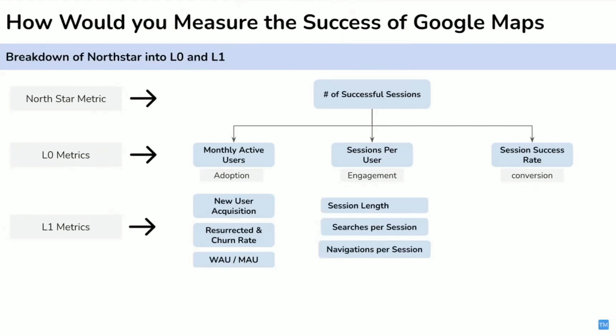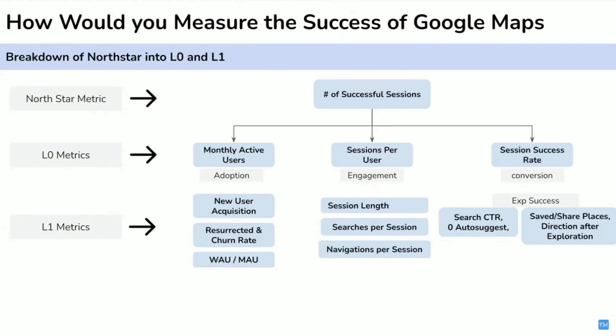The most important metrics are those telling us the quality of the session — we track two things: exploration success rate and navigation success rate. For exploration success rate, we measure search CTR — how many people searching for a place are actually finding it. We also check if they found the correct place, using a proxy: whether users saved the place, shared the place, or started directions after searching. This shows how accurate the information on Google Maps is. If the result is incorrect, users will not take any action and will fire the search again — that is exploration failure.